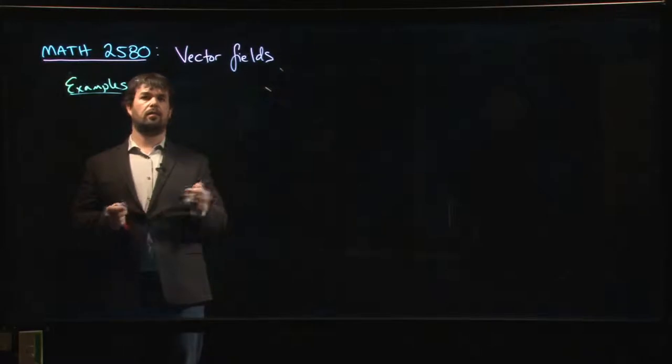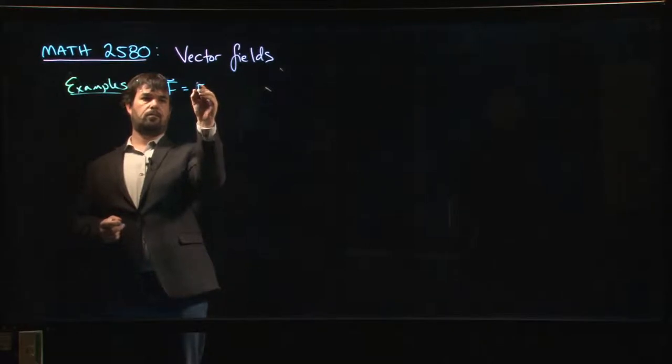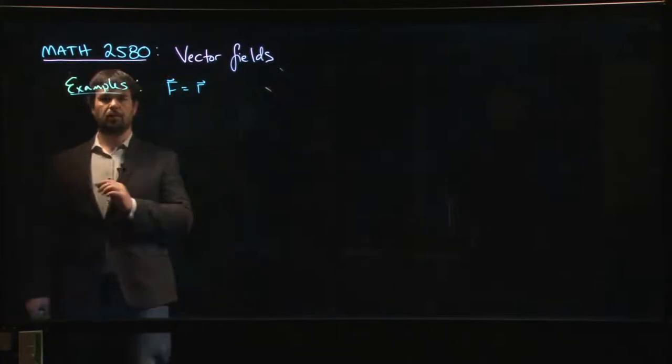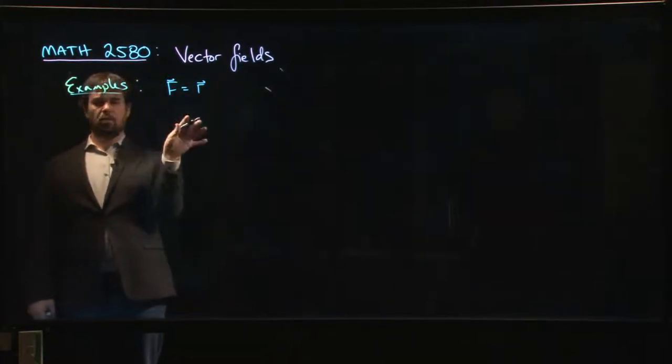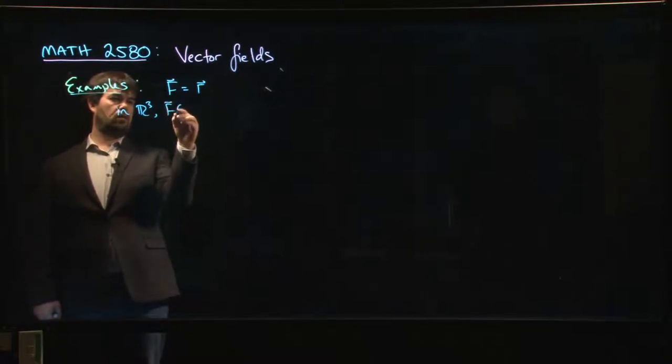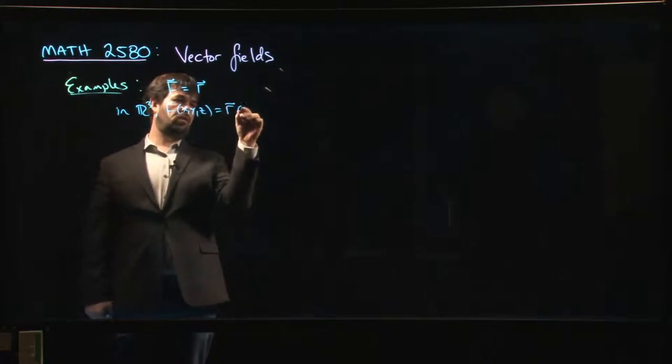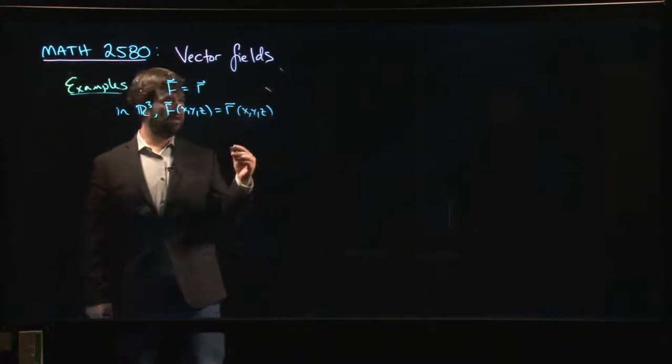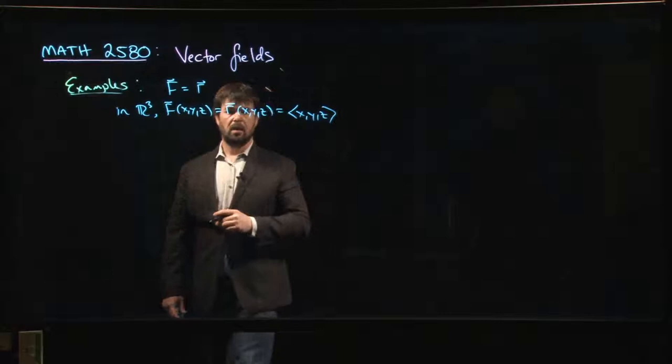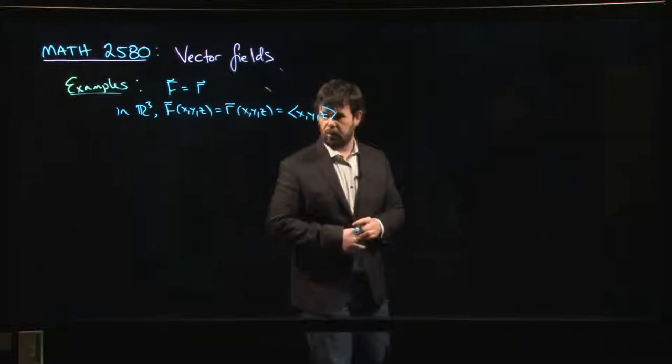We're going to look at the case where our vector field F is just a position vector field. So we're going to look at the position vector field in, I think we'll stick to R³. So in R³, this is the vector field, we'll call it R, R of XYZ, and this is XYZ.